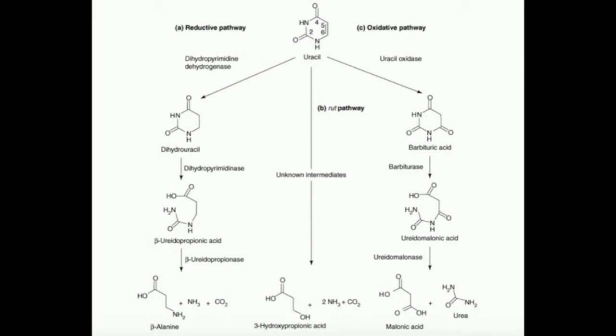An enzyme called dihydropyrimidinase is going to break open the dihydrouracil ring, and that's going to give us something called beta-ureidopropionate.